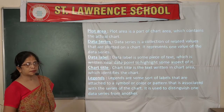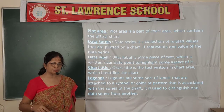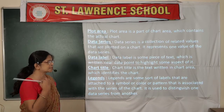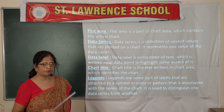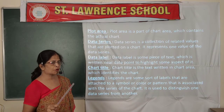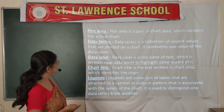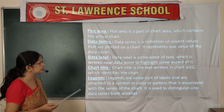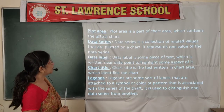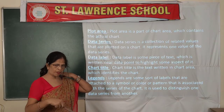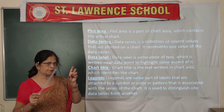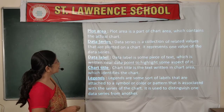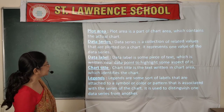The plot area is the part of the chart area which contains the actual chart. Data series means the values of rows and columns from the table that you want to represent as a chart. A data series is a collection of related values plotted on a chart. Data labels are shown in front of every bar or pie slice to display the value of that element — a data label is a piece of text written near a data point to highlight some aspect of it.